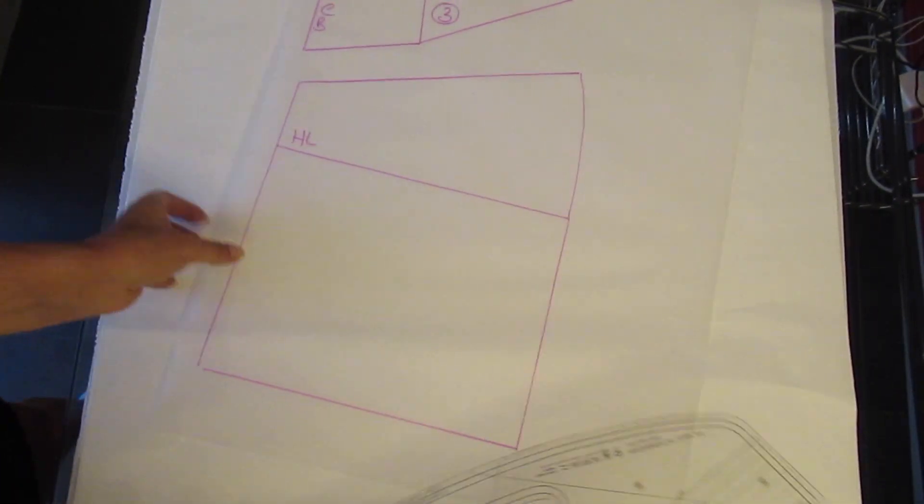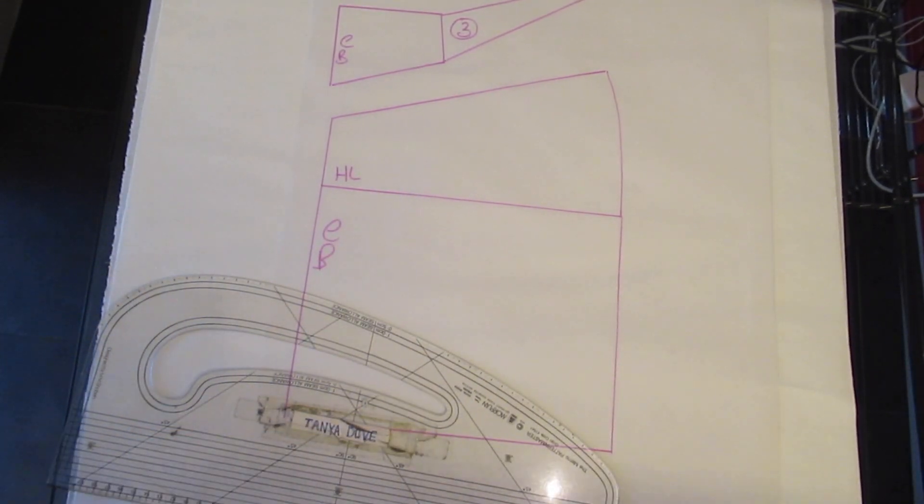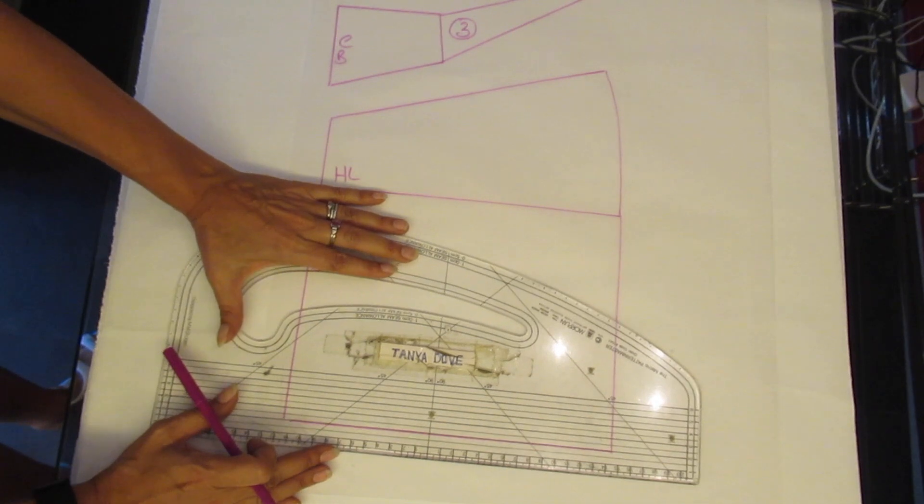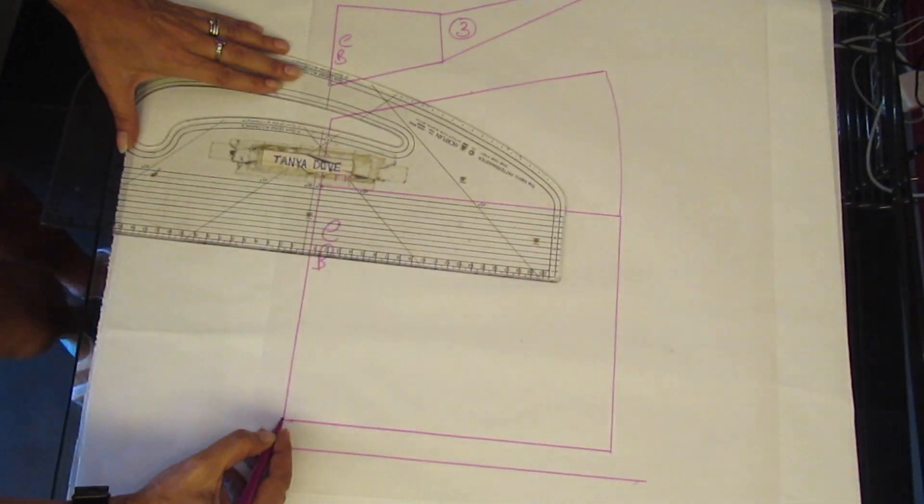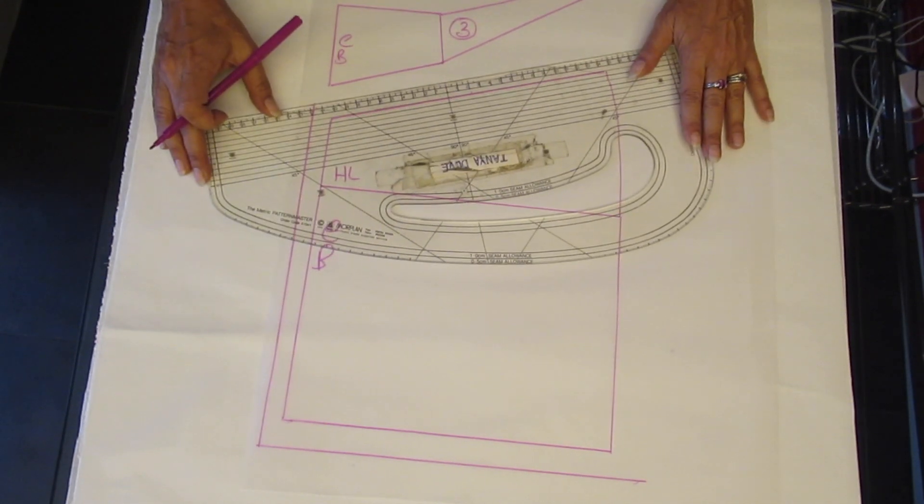Now you can see the three pattern pieces or two of them. Add in a 2cm hem allowance. The centre back has a flat felled seam.